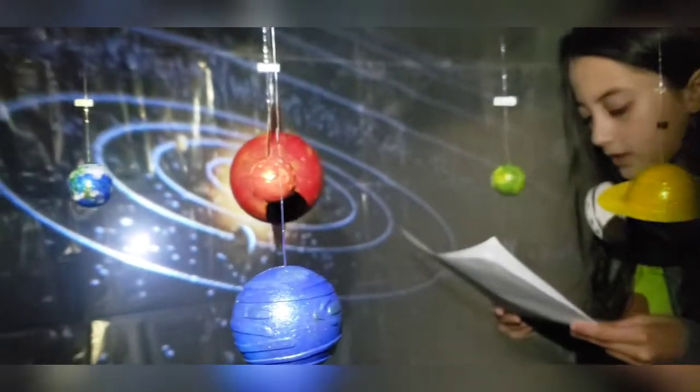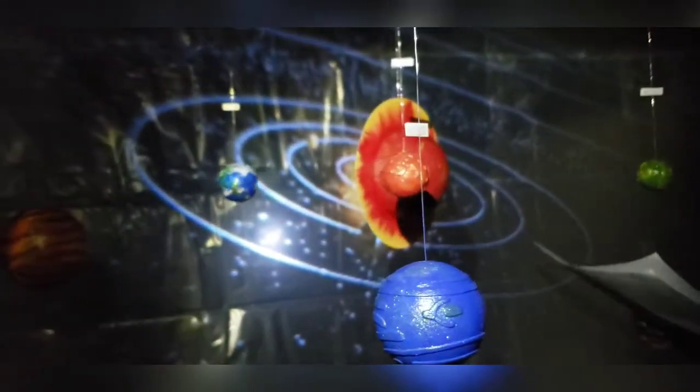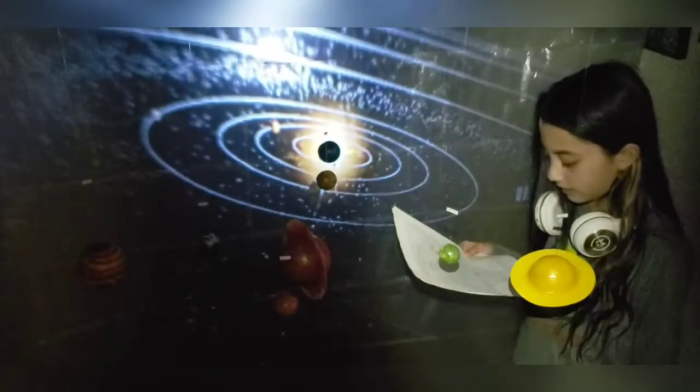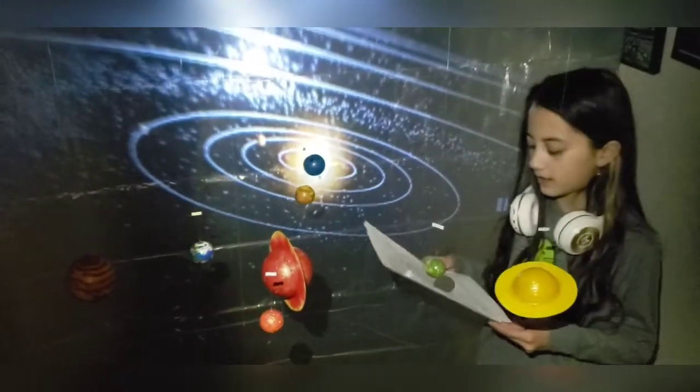Mercury, Venus, Earth, and Mars are all the rocky inner planets. The temperature on Earth is 58 degrees.